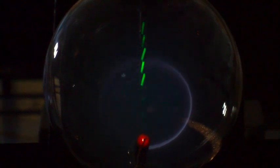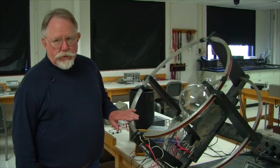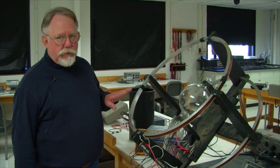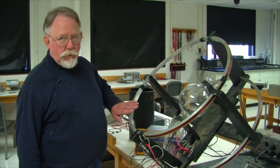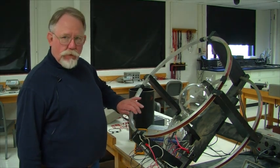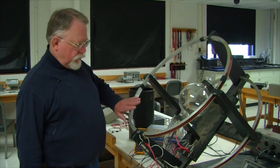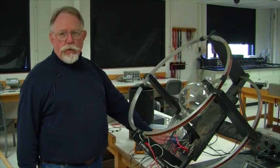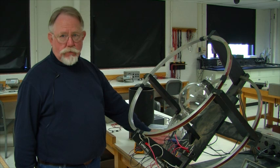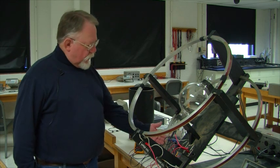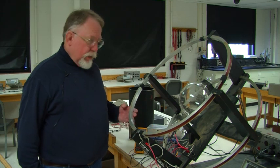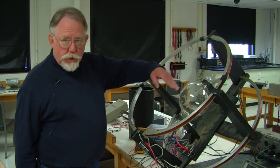One other measurement that you need is the dimensions of the Helmholtz coil. Helmholtz coil configuration is two sets of coils with equal numbers of turns—in this case 72—separated by a distance equal to the radius. So we need to know the radius of the Helmholtz coil.